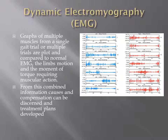Graphs from multiple muscles from a single gait trial or multiple trials are plotted and compared to normal. The limb's motion, or kinematics, and the kinetics of moments of torque or joint powers requiring that muscular action to take place are examined.